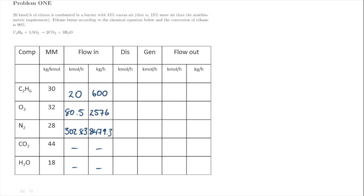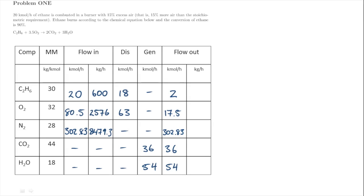We assume there's no CO₂ or water vapour in our feed. The disappearance terms were calculated on the previous slide. There's no disappearance of nitrogen — we assume it doesn't react. The only terms that have a generation aspect are CO₂ and water. Our flow out terms are just calculated as flow in minus disappearance plus generation. For CO₂ and water vapour it's only the generation term.